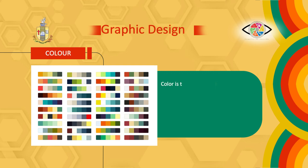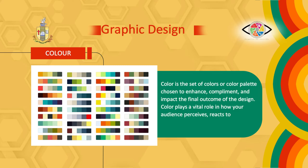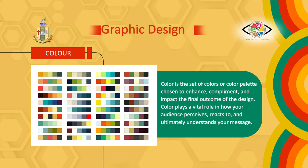Principle 5 - Color. Color is the set of colors or color palette chosen to enhance, complement, and impact the final outcome of the design. Color plays a vital role in how your audience perceives, reacts to, and ultimately understands your message. In color rules, hue is the actual name of a color. Colors can suggest temperature — reds, oranges, browns, and yellows suggest warmth, while blues, greens, and purples suggest coolness. Warm colors appear larger than cool colors. Most colors carry emotional and psychological implications. Saturation is the intensity or boldness of a color. Radiance, or the degree of change from one color into another, creates a 3D effect.